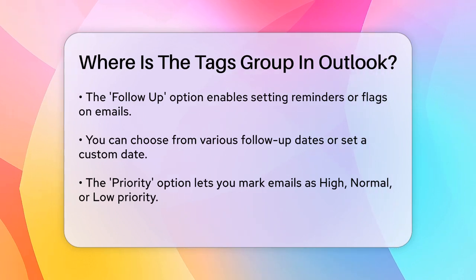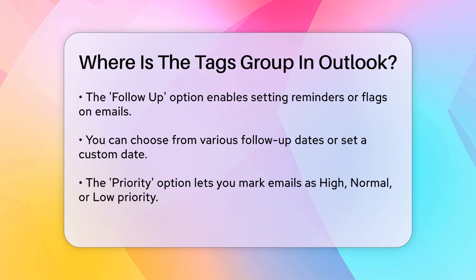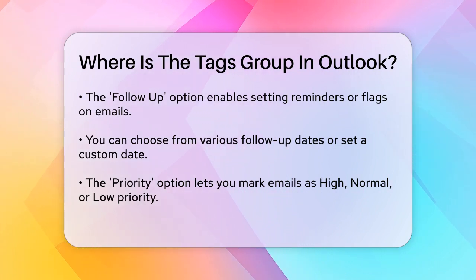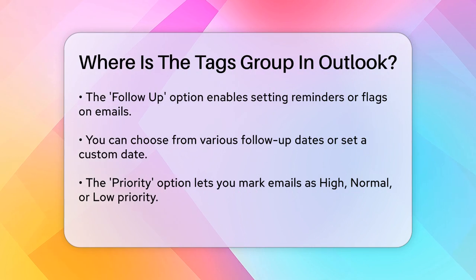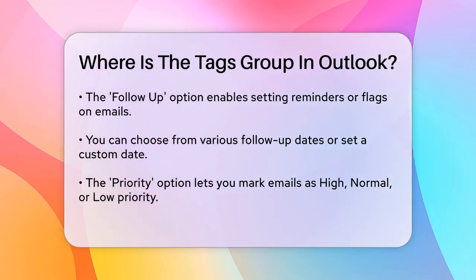If you don't see the Tags group in the Home tab, it might be because your ribbon is customized. You can customize the ribbon by right-clicking on it and selecting Customize the Ribbon, where you can add or remove groups, including the Tags group.